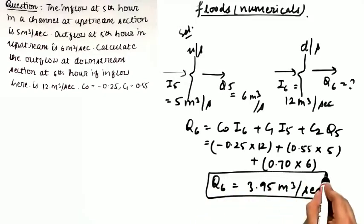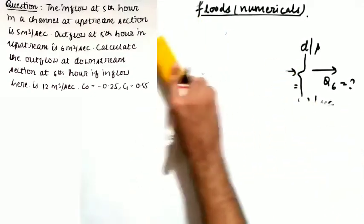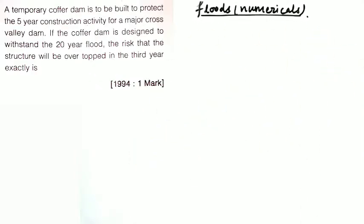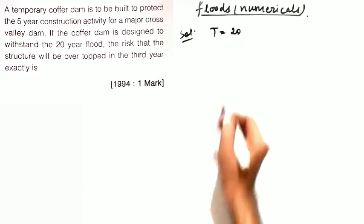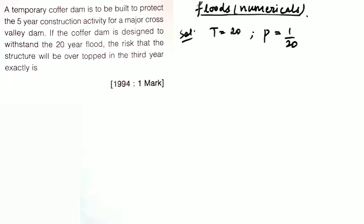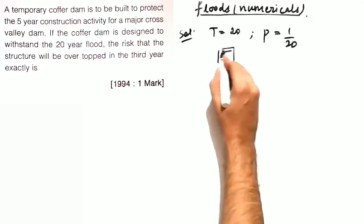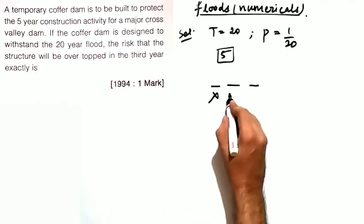Moving on to the next question, which is related to probability. A temporary coffer dam is to be built to protect five years of construction activity for a major dam. The coffer dam is designed to withstand the 20-year flood, so T = 20 and the probability of this flood is 1/20. The question asks for the risk that the structure will be overtopped exactly in the third year.